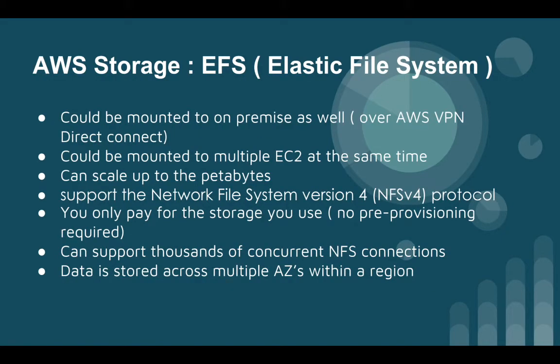Let's move to EFS, Elastic File System. It's essentially a NAS storage that can be mounted with your on-premises environment using Amazon VPN or Direct Connect. It can be mounted to multiple EC2 instances at the same time — it's a shared storage where a single EFS can attach to multiple EC2 instances or multiple servers. It can scale up to petabytes, so no need to worry about scaling. It supports Network File System version 4 (NFS v4) protocol and you pay only for the storage you use.